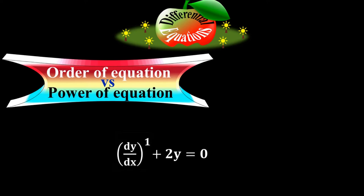The power of dy/dx is 1 — dy/dx is raised to the power 1. Therefore, the power of this differential equation is 1. Order is the number of the highest derivative term; power is the power of the highest derivative term.